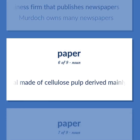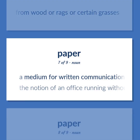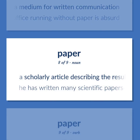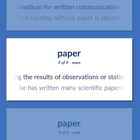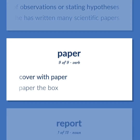Paper. A material made of cellulose pulp derived mainly from wood or rags or certain grasses. A medium for written communication. The notion of an office running without paper is absurd. A scholarly article describing the results of observations or stating hypotheses. He has written many scientific papers. Cover with paper. Paper the box.